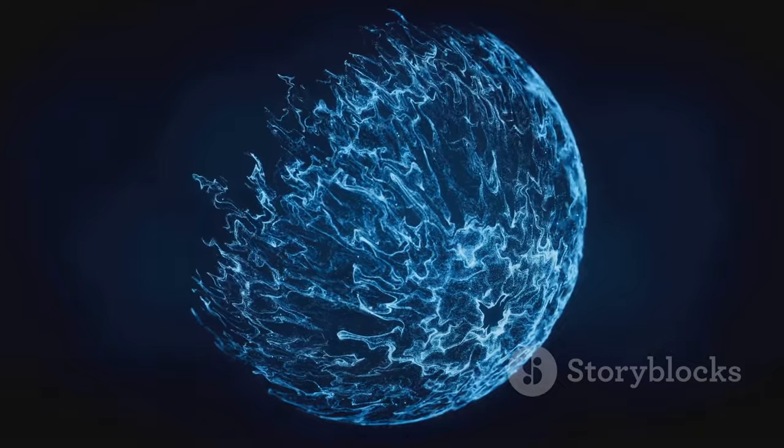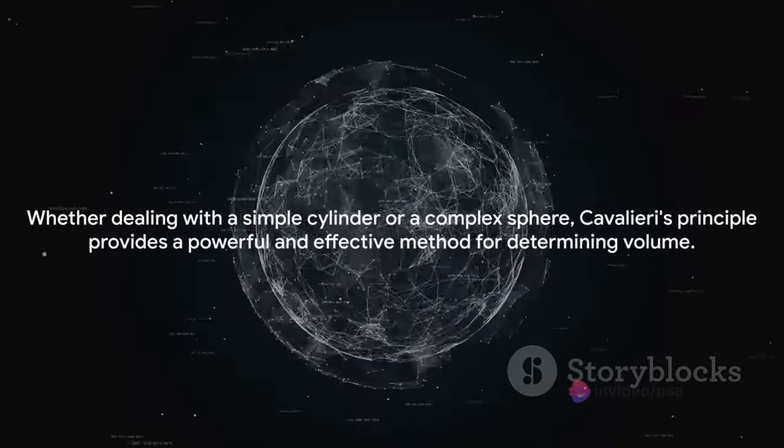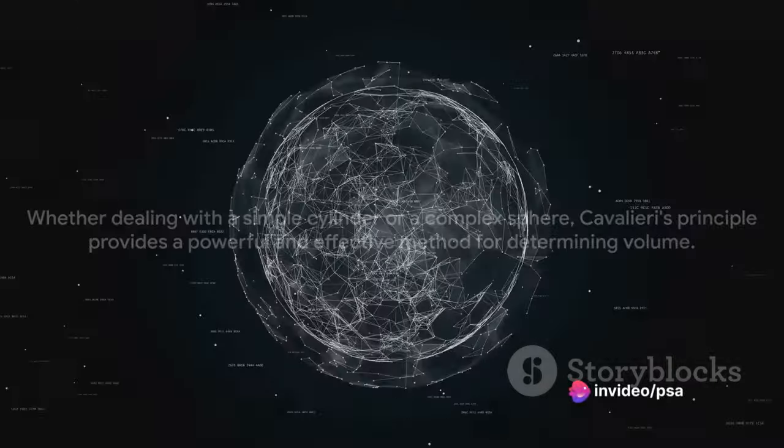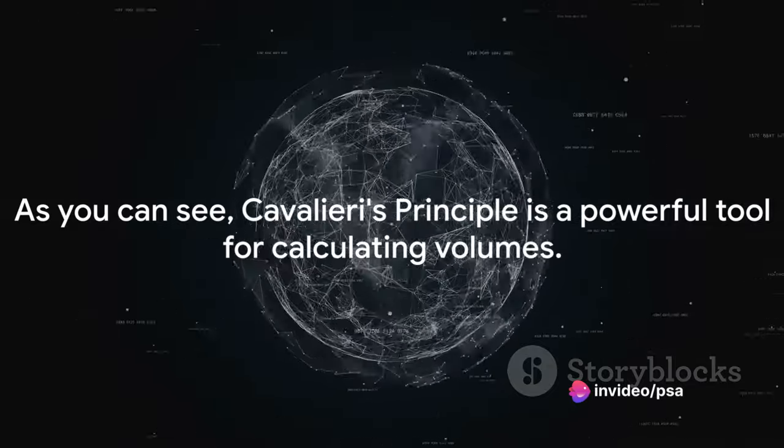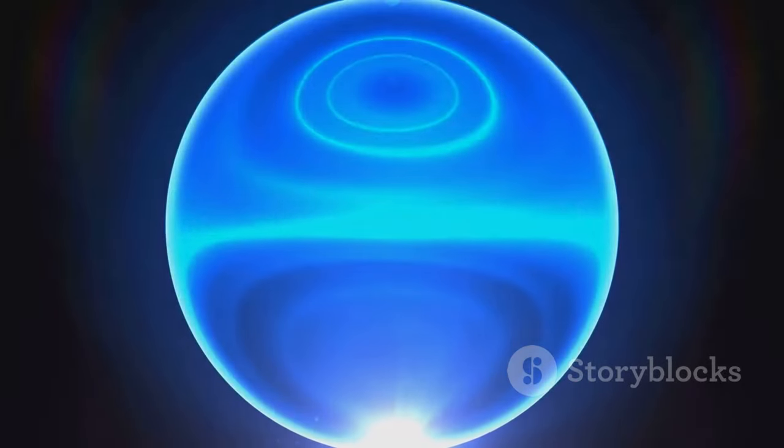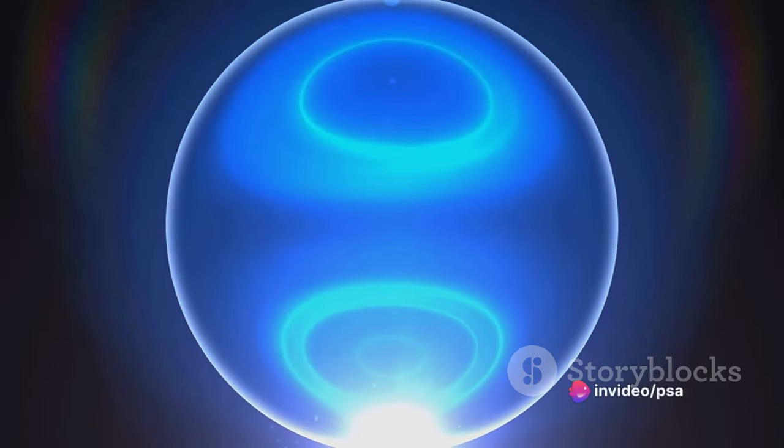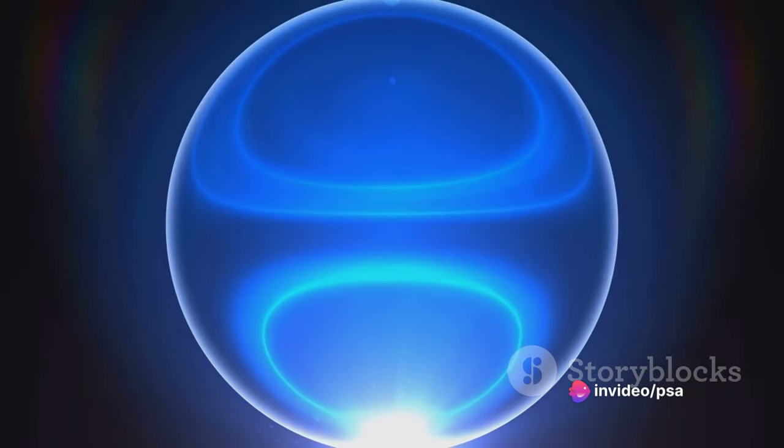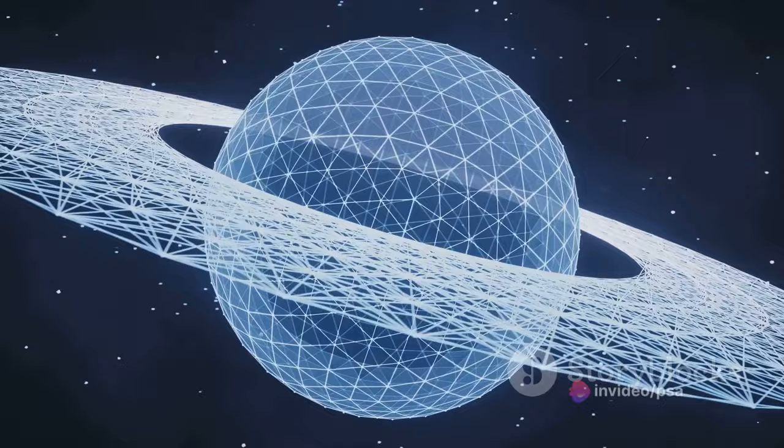Next, let's examine a cone. By the same logic we can slice the cone into tiny disks. However, these disks will not be the same size. They will decrease in size as we move up the cone. The area of each disk is still pi times the radius squared, but now the radius is a function of the height. Integrating over the height of the cone, we again find the volume. Despite the shape's complexity, Cavalieri's principle provides a straightforward method for calculating its volume.